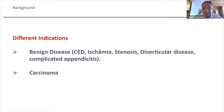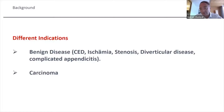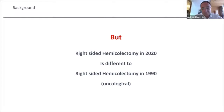Of course we have benign disease: chronic inflammatory disease, ischemia stenosis, diverticular disease, complicated appendicitis. And what we more often talk about is carcinoma. What we have to bear in mind is that right-sided hemicolectomy in 2020 is a real, plain, adapted, anatomical, straightforward oncological resection with a highly impactful lymphadenectomy.